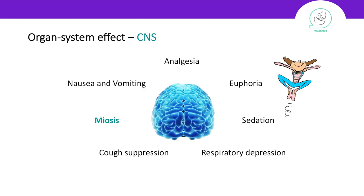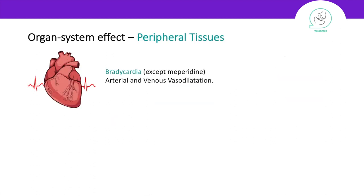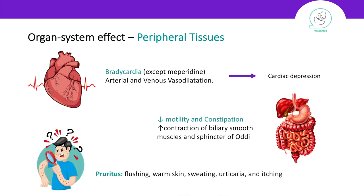Lastly, opioids cause nausea and vomiting through the chemoreceptor trigger zone. In terms of peripheral tissue effects — in the heart, opioids cause bradycardia, except for meperidine, and cause arterial and venous vasodilation, which can result in cardiac depression as a side effect. In the GI tract, opioids decrease motility, and the patient can present with constipation as a side effect; however, this also means opioids can be used clinically for someone with diarrhea. Opioids also increase the contraction of biliary smooth muscle and the sphincter of Oddi — so never give opioids to someone with biliary stones. Lastly, opioids cause the release of histamine, leading to pruritus symptoms such as flushing, warm skin, sweating, urticaria, and itching.